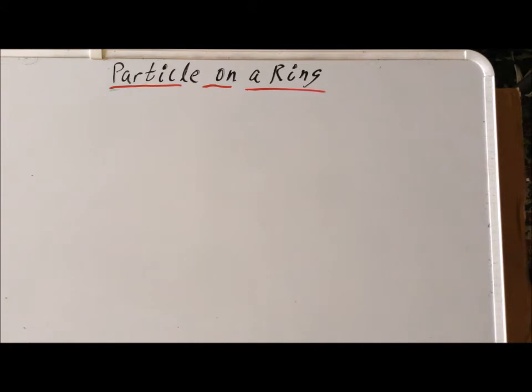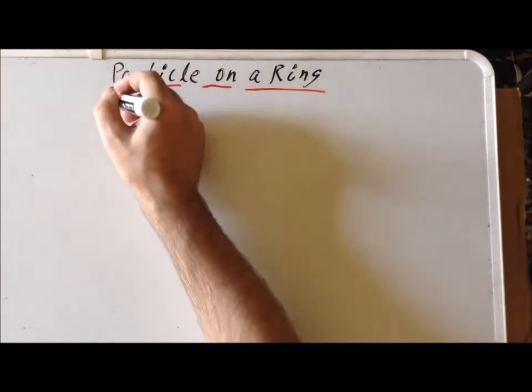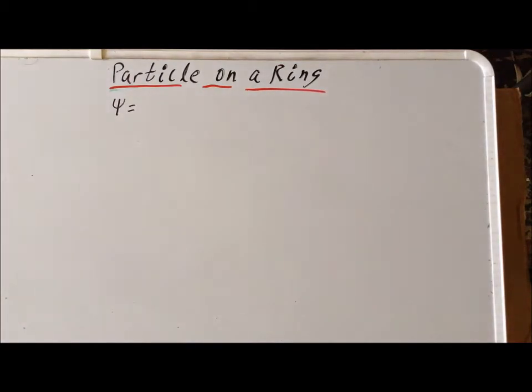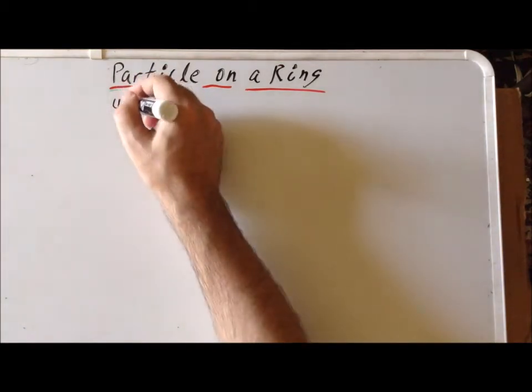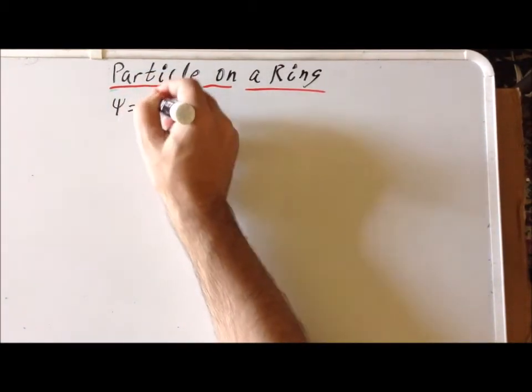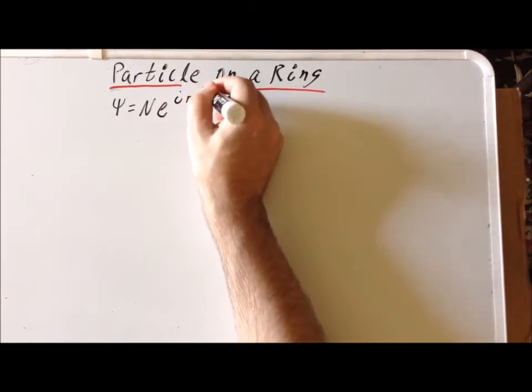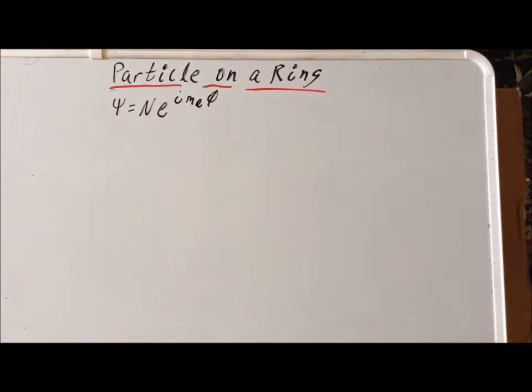Hello. Recall that in a previous video, we had shown that an eigenfunction of the Hamiltonian for the particle on a ring system is equal to N times e to the i m sub l phi. In this video, we want to derive conditions on m sub l, if there are any, that will satisfy this particular problem.